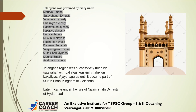Telangana was ruled by several rulers starting from the Mauryan Empire to the Asaf Jahi dynasty. In chronological order: Mauryan Empire, Satavahana dynasty, Vakataka dynasty, Chalukya dynasty, Rashtrakuta dynasty, Kakatiya dynasty, Delhi Sultanate, Musunuri Nayaks, Recherla Nayaks, Bahmani Sultanate, Vijayanagara Empire, Qutb Shahi dynasty, Mughal Empire, and Asaf Jahi dynasty.